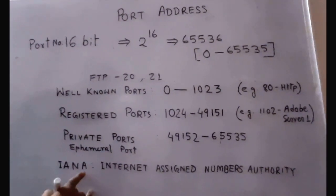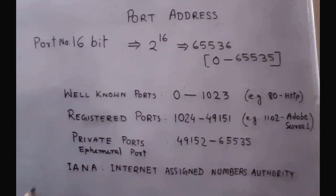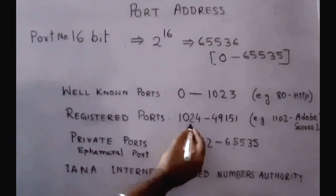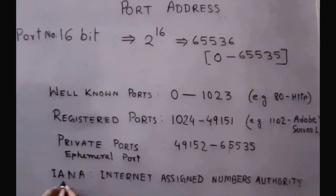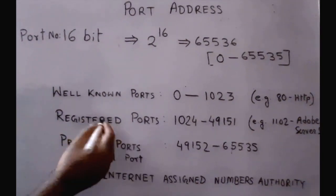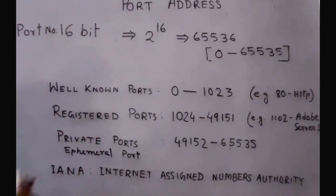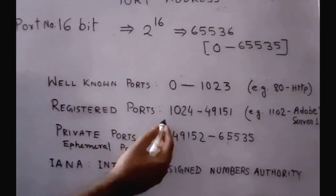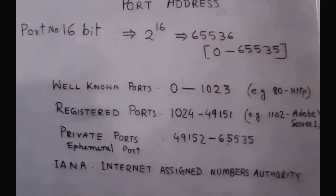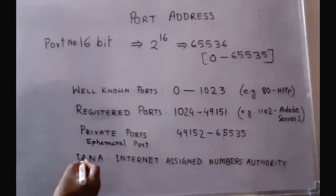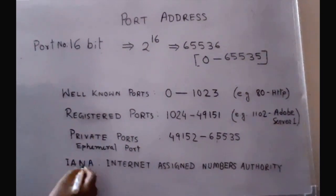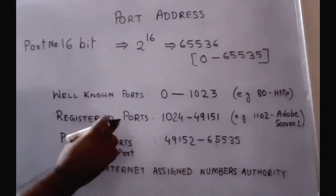Registered ports range from 1,024 to 49,151. IANA never controls these ports. Various companies use these ports for their own services. For example, 1102 is used by Adobe Server 1. IANA does not control these ports but they list the services.